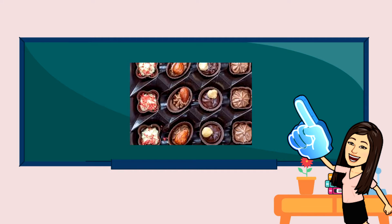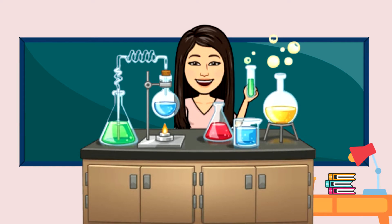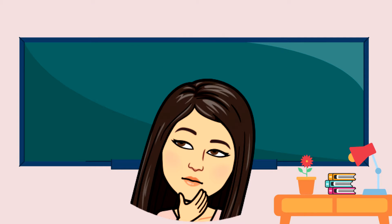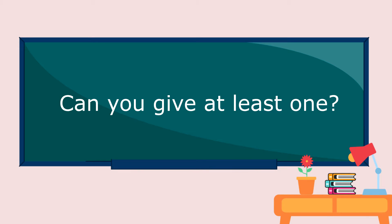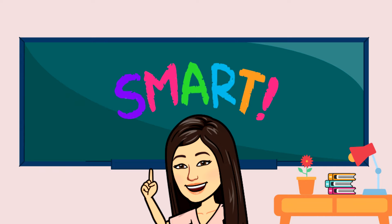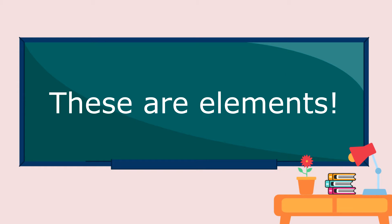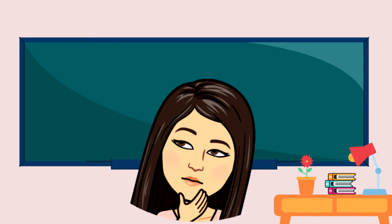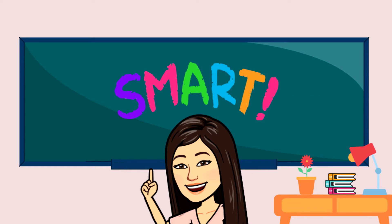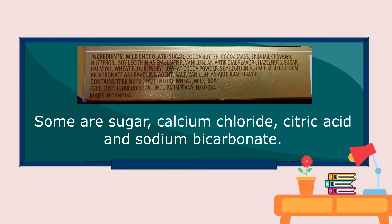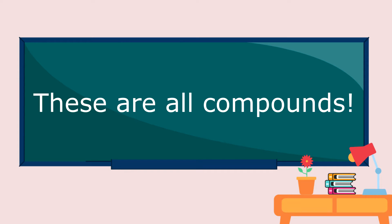How about a chocolate candy? I know you have already tried one. What are the elements and compounds present in a chocolate candy? We have sodium, calcium, and iron, and these are elements. How about compounds? We have white sugar, calcium chloride, citric acid, and sodium bicarbonate, and these are all compounds.